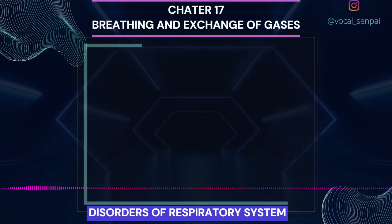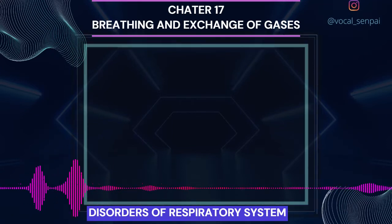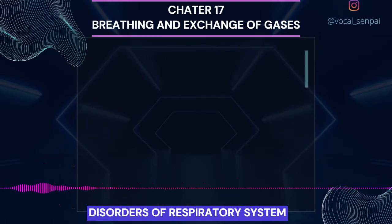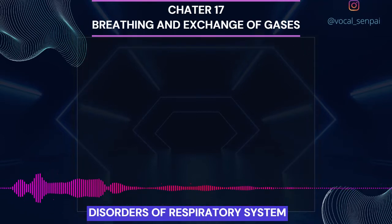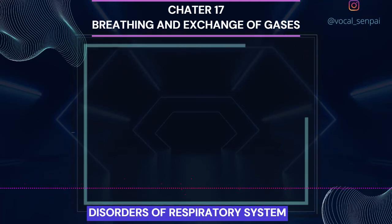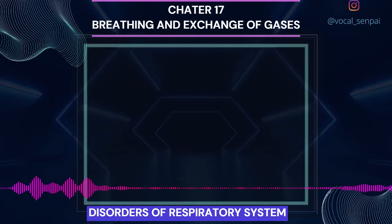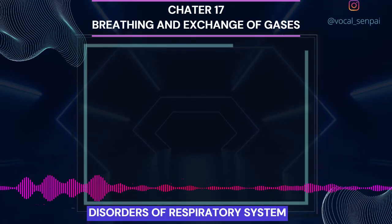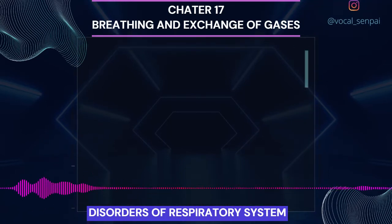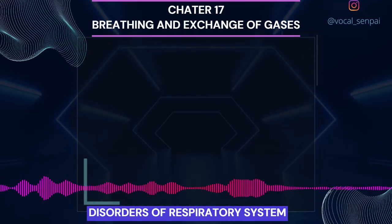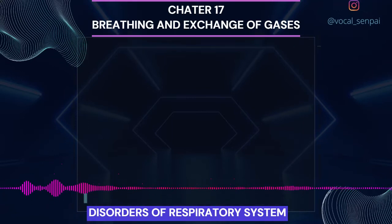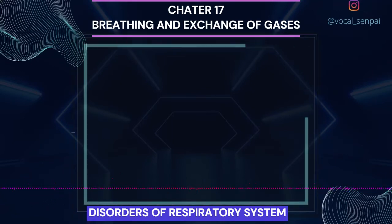Disorders of Respiratory System: Asthma is a difficulty in breathing causing wheezing due to inflammation of bronchi and bronchioles. Emphysema is a chronic disorder in which alveolar walls are damaged, due to which respiratory surface is decreased; one of the major causes of this is cigarette smoking. Occupational respiratory disorders: in certain industries, especially those involving grinding or stone breaking, so much dust is produced that the defense mechanism of the body cannot fully cope with the situation. Long exposure can give rise to inflammation leading to fibrosis (proliferation of fibrous tissues) and thus causing serious lung damage. Workers in such industries should wear protective masks.